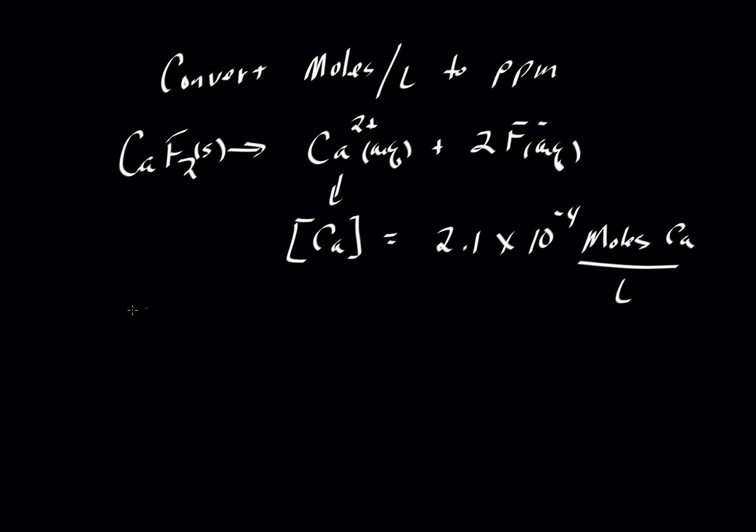Well, what we're going to try to do is convert that into parts per million. Now, when we talk about parts per million, that calculation is almost always given as a weight fraction. So we need the amount of grams of calcium, not just the number of moles. So we're going to take 2.1 times 10 to the minus 4. That gives us the moles of calcium per liter.